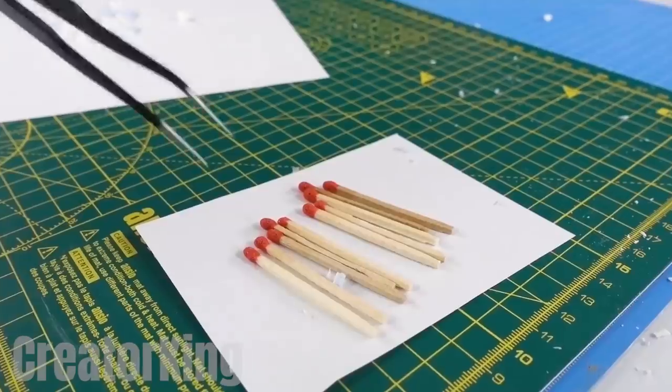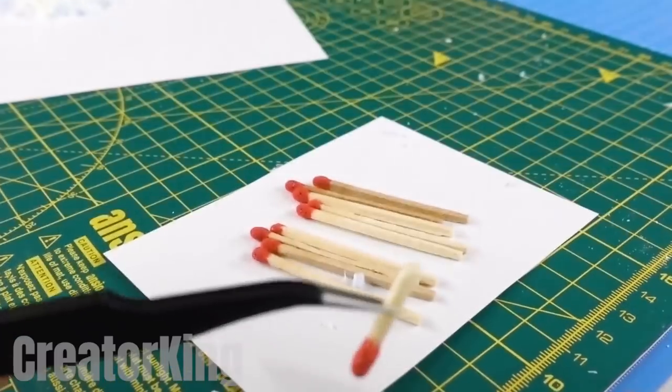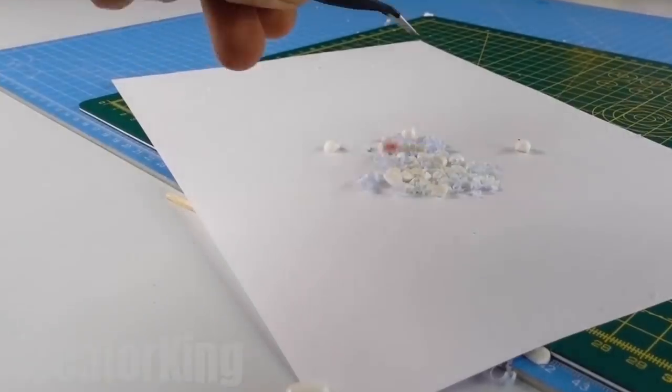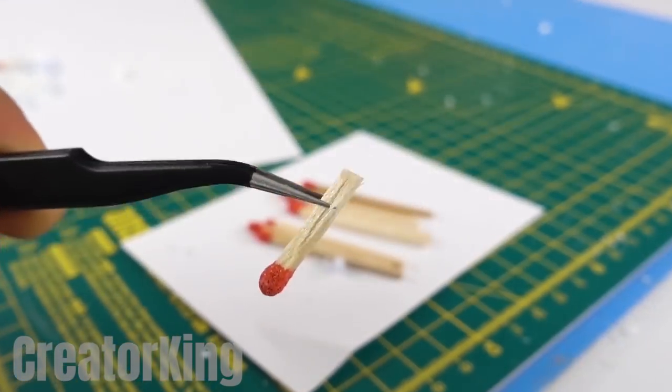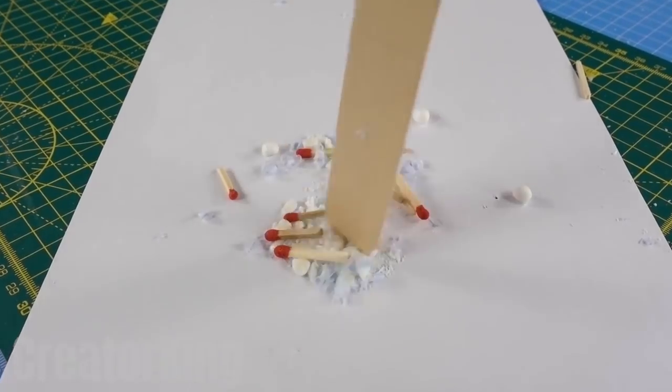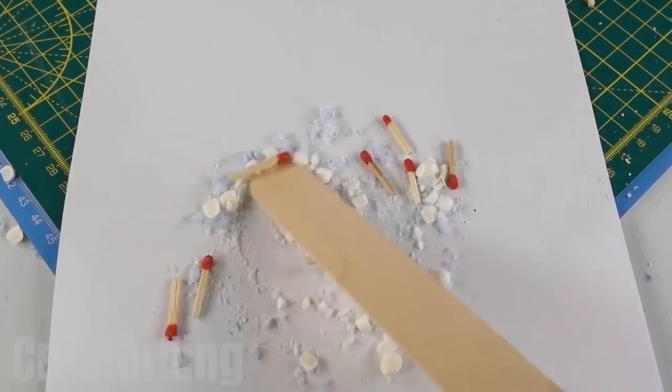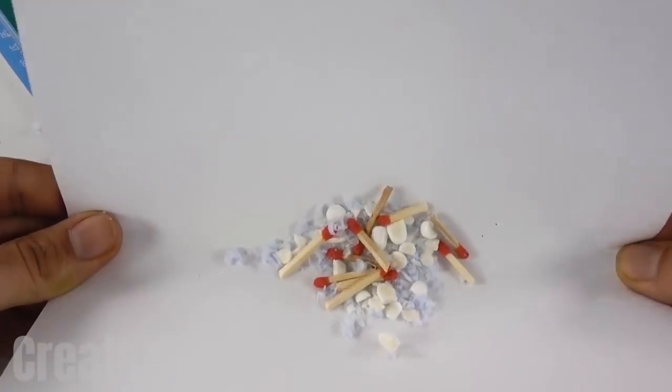Bring back the matches from a few moments ago, and with the help of tweezers, cut them practically in half. Place the pieces alongside the other ingredients. With the help of a popsicle stick or any elongated object, you can group everything together in the center by moving the paper like you see here on the screen.